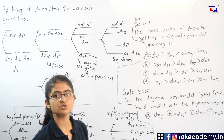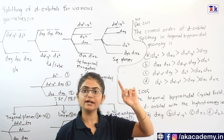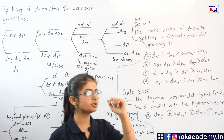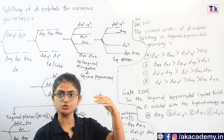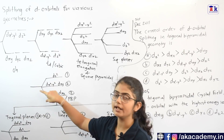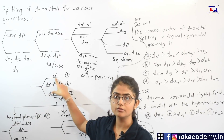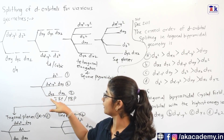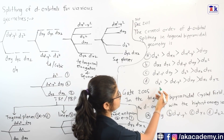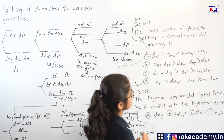Let's solve a question from NET December 2011 asking for the correct order of d orbital splitting in trigonal bipyramidal geometry. As discussed, Z-component orbitals lie at the extremes: DZ square is highest, DYZ and DXZ are lowest, and DX square minus Y square and DXY lie in between. The correct option is the one where DZ square has the highest energy followed by DX square minus Y square, confirming the answer.